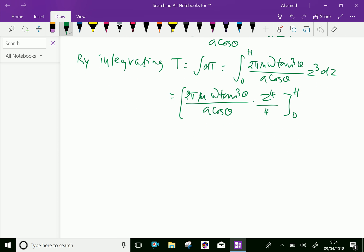So, the final T equal, after substituting the value of Z as H and zero, we can get pi mu omega tan cube theta over 2 A cos theta into H power 4. This is an expression for the torque on the shaft due to viscosity of the oil.